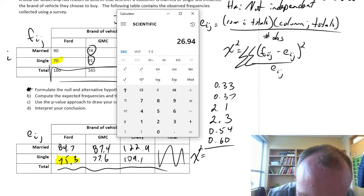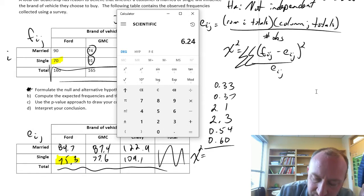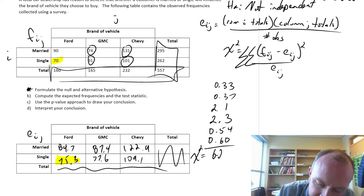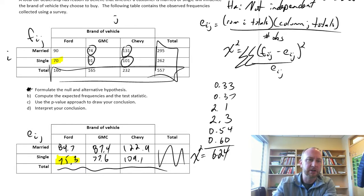Oh, I think I missed a point in there, didn't I? Yeah, I missed a point. 0.33. This is why I don't like this calculator. Plus 2.1, plus 2.3, plus 0.54, plus 0.6. That looks better. 6.24. So there's finally our test statistic.